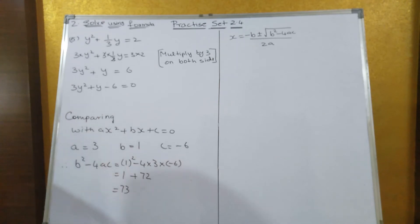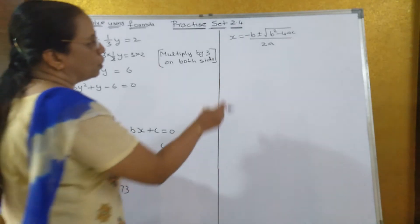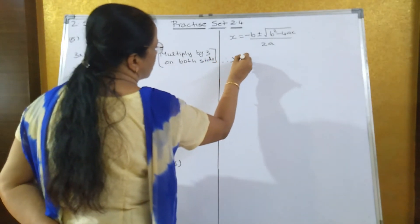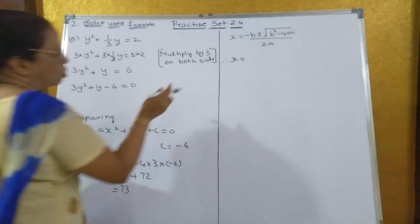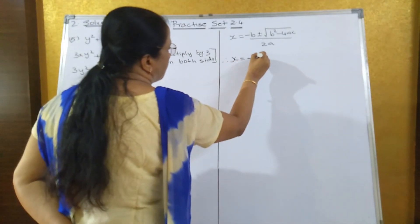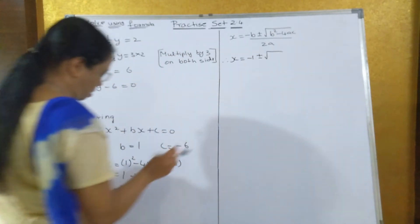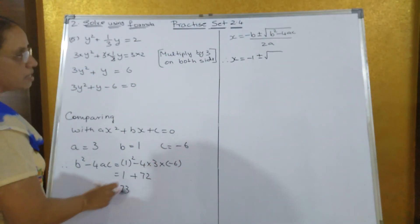What's the formula? x = (-b ± √(b² - 4ac))/2a. Therefore, x is equal to -b, b is 1, so -1 ± √(b² - 4ac) which is 73.